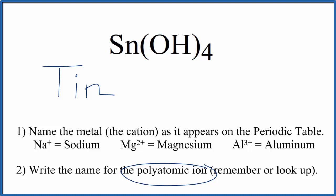You either memorize that this is called the hydroxide ion, or if you're allowed, you look it up on a table of polyatomic ions. So for OH we write hydroxide, and so far we have tin hydroxide as the name for Sn(OH)4.